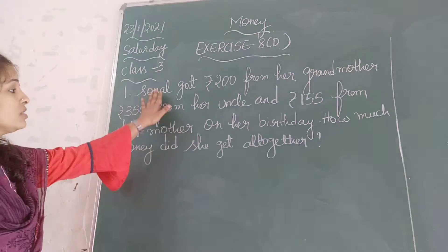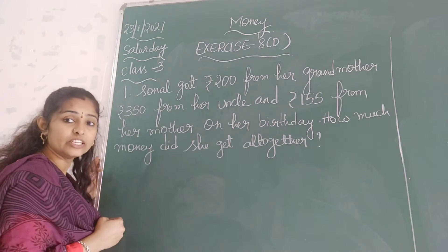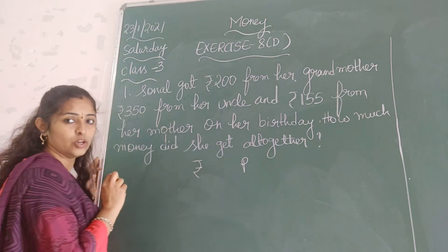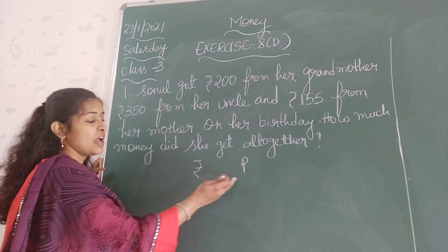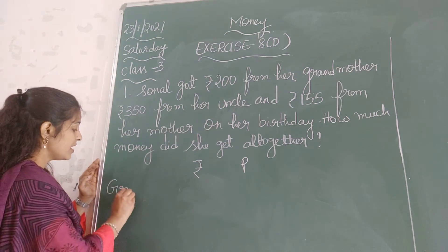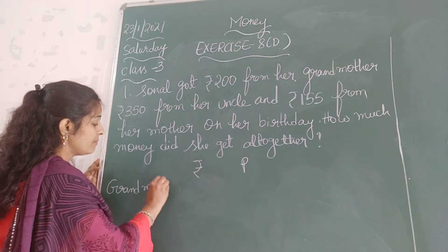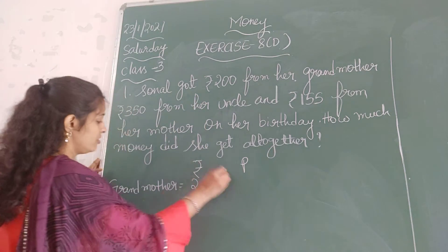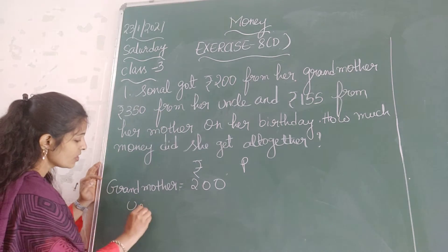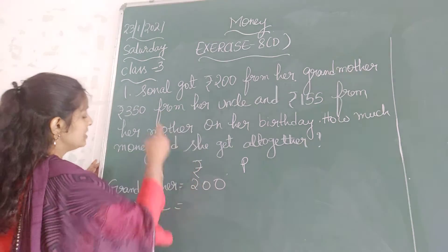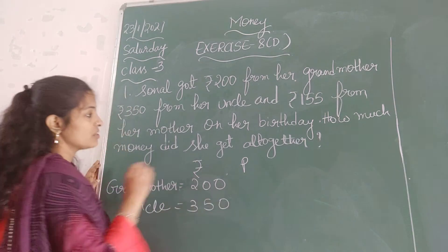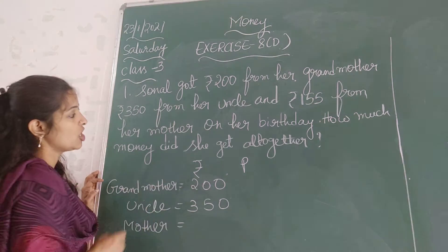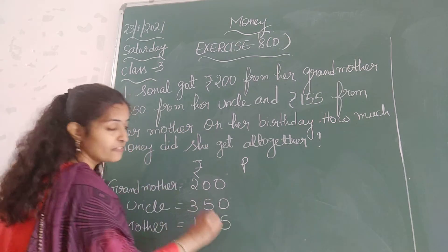Now let us write down the amounts. The money will be divided into rupees and paise. From her grandmother she got 200 rupees. From her uncle she got 350 rupees. From her mother the amount she got is 155 rupees.